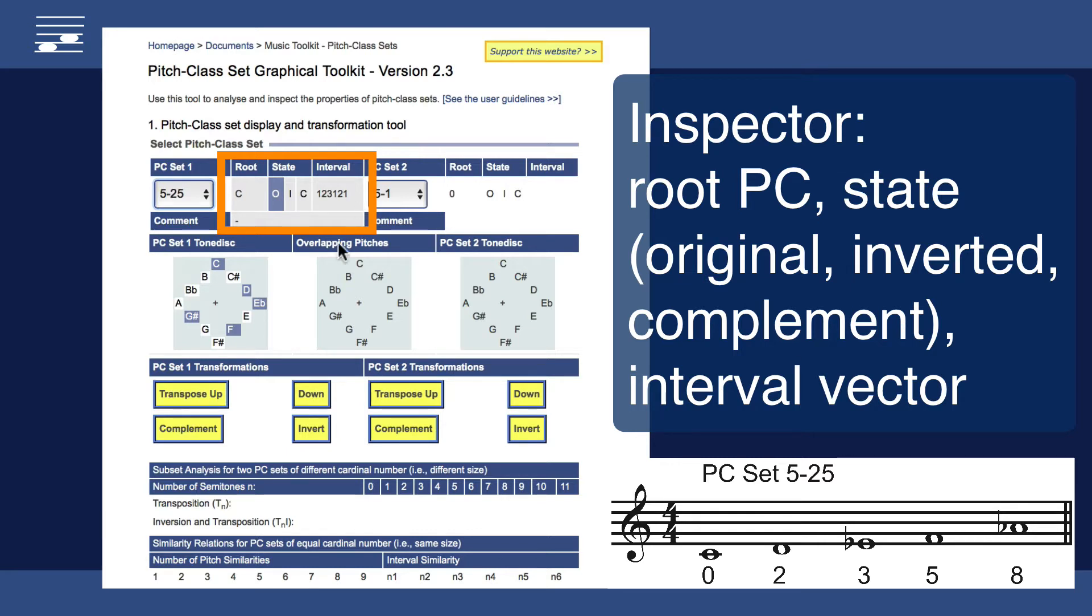Looking at the six element interval vector we may verify the single minor second interval D to E-flat, the two major second intervals C to D and E-flat to F, and the minor third intervals such as F to A-flat.